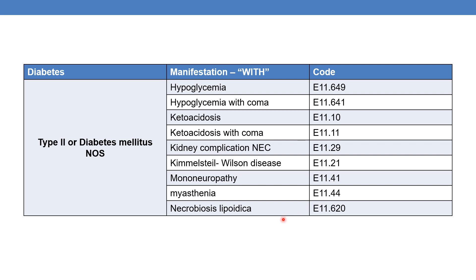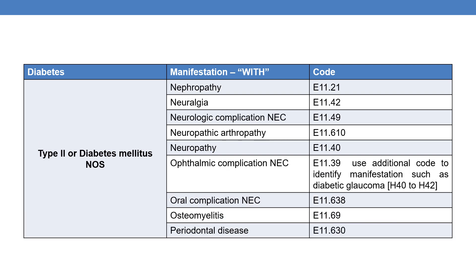For diabetes mellitus with necrobiosis lipoidica, the code is E11.620. For type 2 diabetes mellitus with nephropathy, the code is E11.21. For diabetes with neuralgia, the code is E11.42. For diabetes with other neurologic complication NEC — not elsewhere classifiable — the code is E11.49.